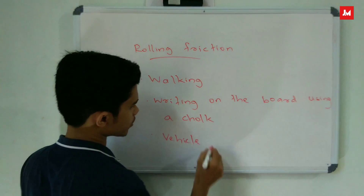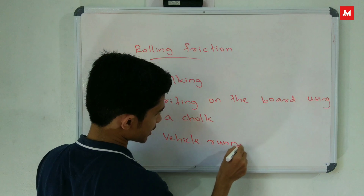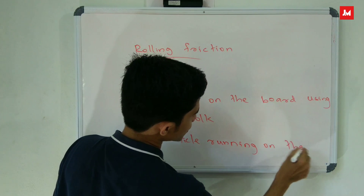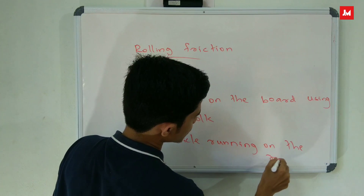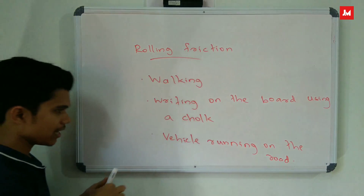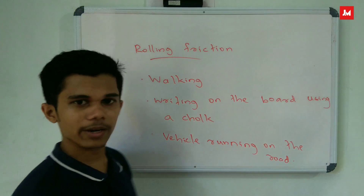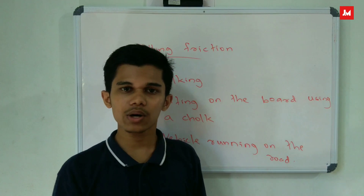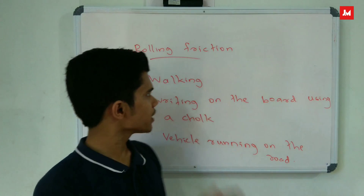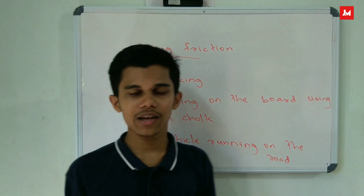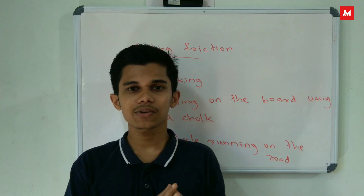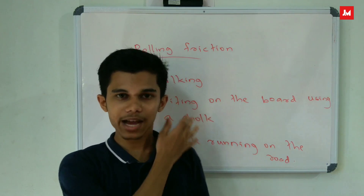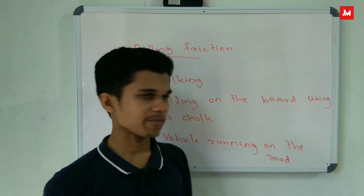Another friction example is a vehicle running on the road. The surface of the road is in contact with the vehicle, and friction acts between the contact surfaces.